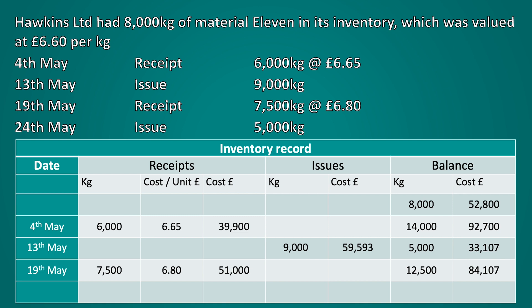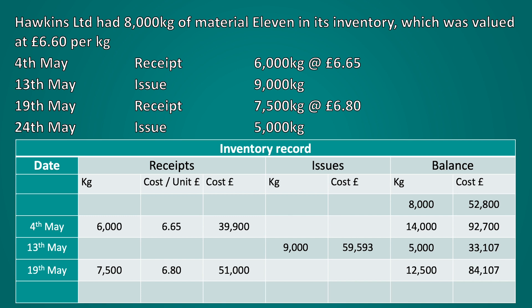The last transaction to record would be the issue on the 24th of May of 5,000 kilograms. Remember this will be valued at the average price of inventory, so we need to recalculate the average because we've had a receipt since the last calculation. The average would be the balance of £84,107 divided by 12,500 kilograms. We then multiply this by 5,000 kilograms issued, giving us an issue value of £33,643.